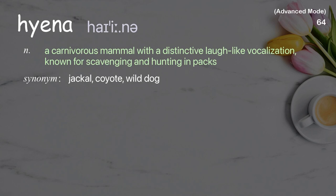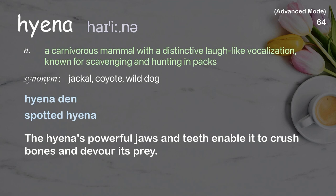Hyena: A carnivorous mammal with a distinctive laugh-like vocalization, known for scavenging and hunting in packs. Examples: Hyena den, Spotted hyena. The hyena's powerful jaws and teeth enable it to crush bones and devour its prey.